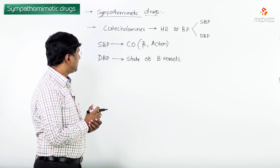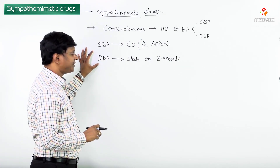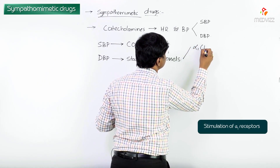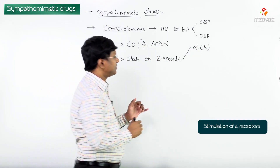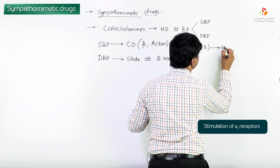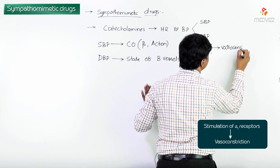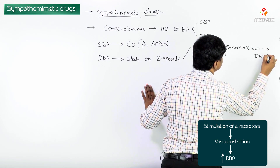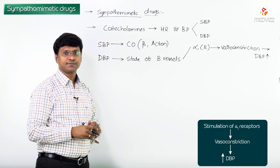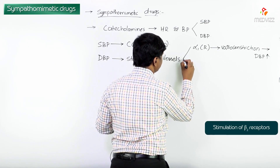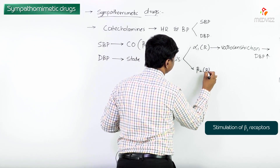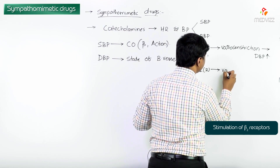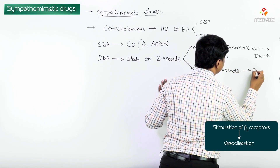Whenever there is stimulation of alpha-1 receptors, there will be vasoconstriction, and thereby the diastolic blood pressure increases. Whereas when beta-2 receptors are activated — because blood vessels also have beta-2 receptors — that will result in vasodilation, and thereby diastolic blood pressure decreases.